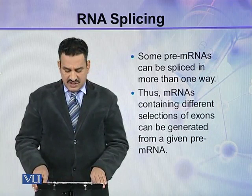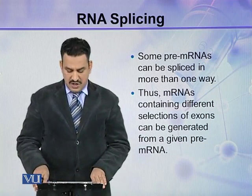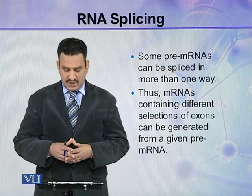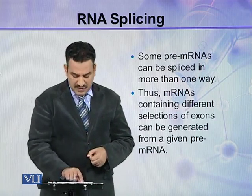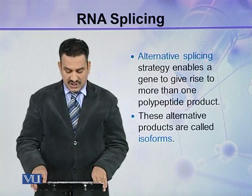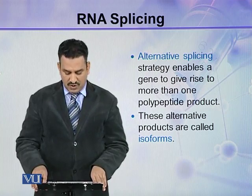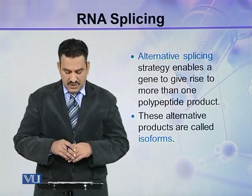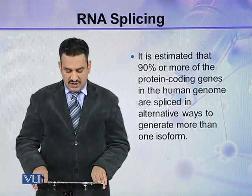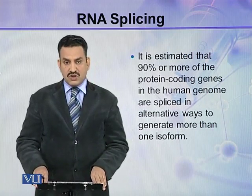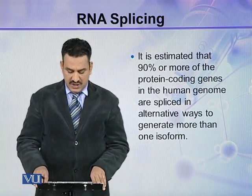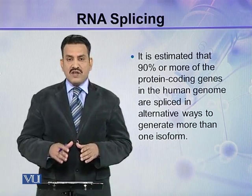Some pre-mRNAs can be spliced in more than one way, so mRNAs containing different selections of exons can be generated from a given pre-mRNA. This alternative splicing strategy enables a gene to give rise to more than one polypeptide product. These alternative products are called isoforms. It is estimated that 90% or more of the protein-coding genes in the human genome are spliced in alternative ways to generate more than one isoform.